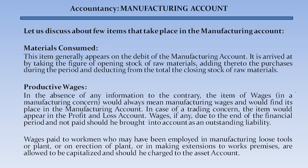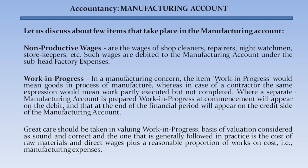Materials consumed generally appears on the debit of the manufacturing account. It is arrived at by taking the opening stock of raw materials, adding purchases during the period, and deducting the closing stock of raw materials. Production wages: in the absence of any information to the contrary, wages in a manufacturing concern always mean manufacturing wages and appear in the manufacturing account, whereas in a trading concern they appear in the profit and loss account. Wages due at the end of the financial period but not yet paid should be brought in as an outstanding liability. Wages paid to workmen employed in manufacturing loose tools, plant, erection of plant, or extensions to works premises may be capitalized and charged to this account.